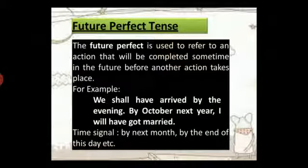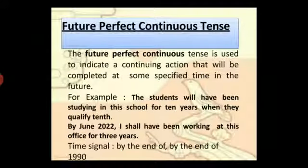Future perfect continuous tense is used to talk about an ongoing action that will be continued or will have just been completed at a mentioned time in the future. For example: 'The students will have been studying in this school for 10 years when they qualify 10th' and 'By June 2022, I shall have been working at this office for 3 years.'